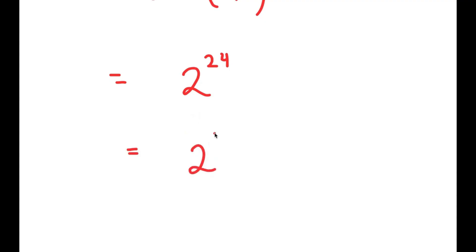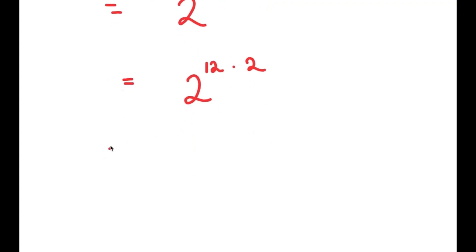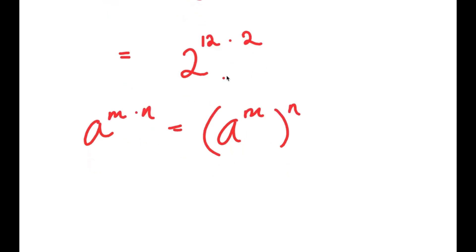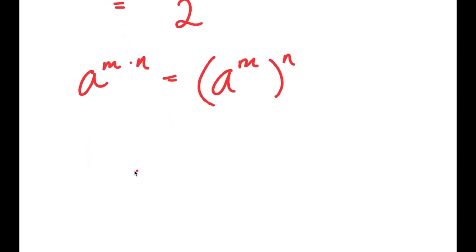From here I'm going to write 2 to the power of 24 as 2 to the power of 12 times 2. The reason I did this is because I can now use the property a to the power of m times n is equal to a to the power of m to the power of n. So 2 to the power of 12 times 2 is equal to 2 to the power of 12, to the power of 2.